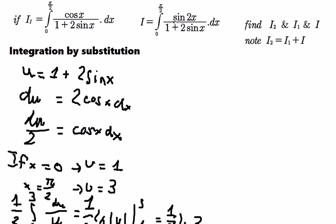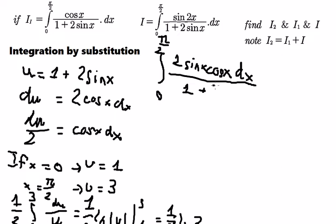The next one we have the integral from 0 to π over 2. Sin 2x we change for 2 sin x cos x dx, and we got 1 plus 2 sin x, so we will use integration by substitution for this one.